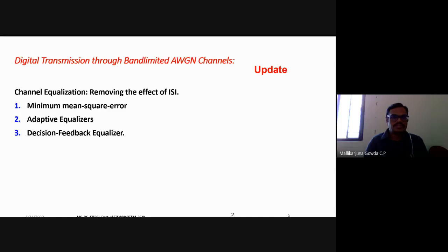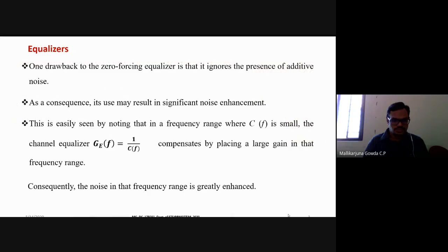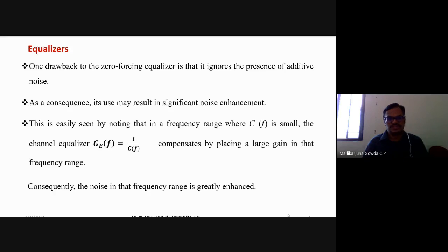Today we will discuss the minimum mean square error equalizer. Before we start, why do we go for the MMSE equalizer? We need to understand the drawback of the zero-forcing equalizer. The drawback is that it ignores the presence of additive noise.